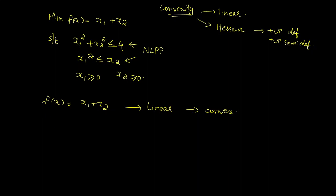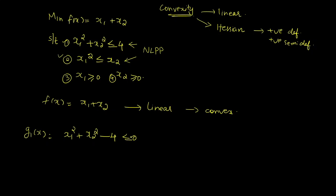There are four constraints; the first two are non-linear. For g1(x) = x1² + x2² − 4 ≤ 0, we need to find the Hessian. The Hessian is a 2×2 matrix. The diagonal elements come from the coefficients of the squared terms: the coefficient of x1² is 1, and twice that is 2; similarly for x2², giving 2.